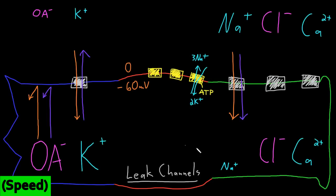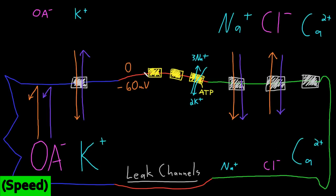The resting membrane has an intermediate permeability to chloride ions of around 45 percent of the permeability to potassium. Unlike potassium and sodium, whose concentration gradients play a big role in creating the resting membrane potential, for chloride the resting membrane potential plays a big role in determining its concentration gradient. The potential drives chloride out until its concentration gradient balances it, giving a small intracellular chloride concentration. Most neurons also have the chloride-potassium cotransporter, which harnesses the diffusion force on potassium to push additional chloride out, setting the chloride equilibrium potential around negative 70 millivolts rather than at the resting potential of negative 60 millivolts.